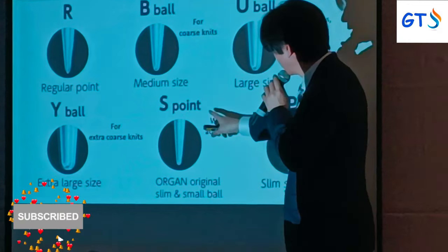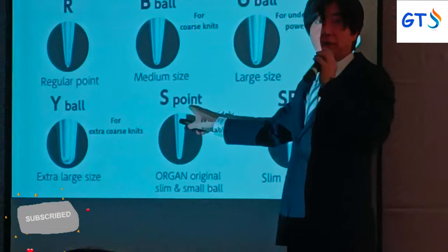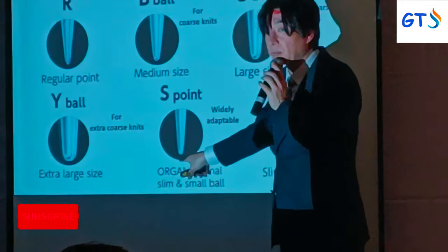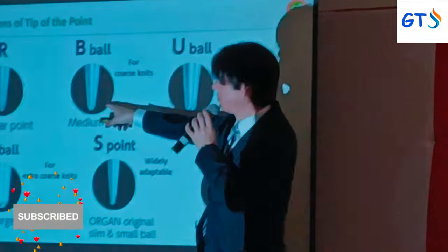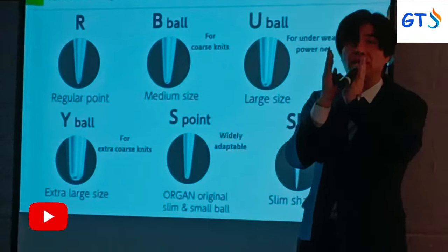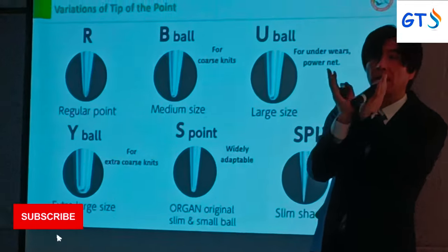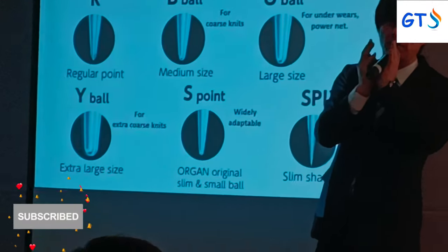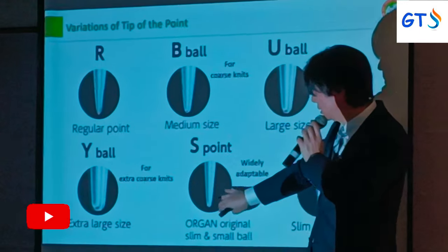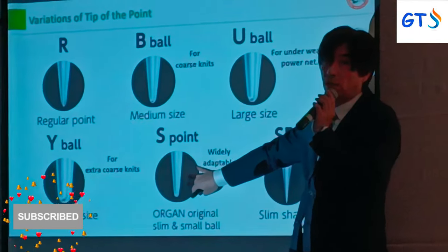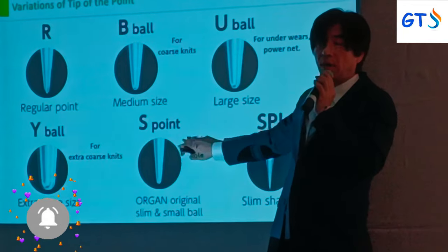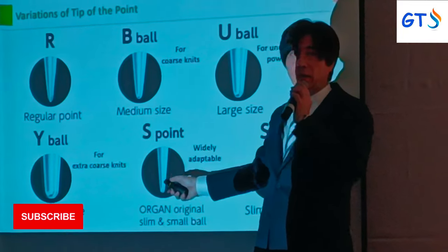And one more — the S-point. The S-point is the small ball point, smaller than the B-ball point, and has slim angles. The needle point is slimmer, so the pressure given to the fabric is lower with this one.